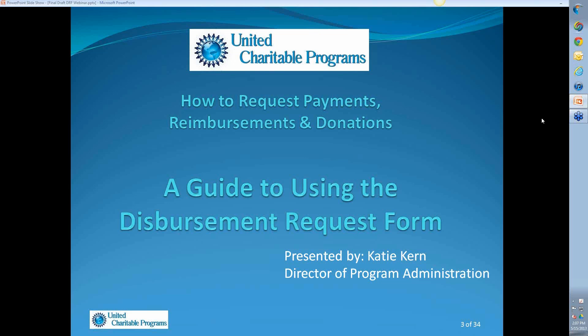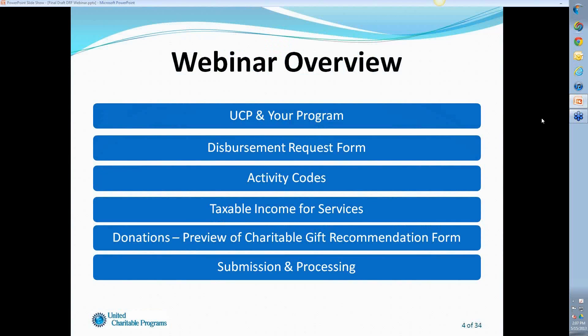Here's a quick overview of the things we're going to touch on today: UCP and your program, the Disbursement Request Form, the Activity Code, Taxable Income for Services, Donations — with a sneak preview of the Charitable Gift Recommendation Form, which is a new form relating only to charitable donations both overseas and in the United States — and finally the submission of the Disbursement Request Form and any processing and delivery options available to you.